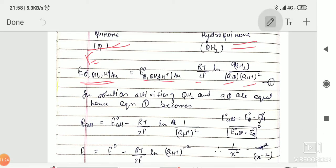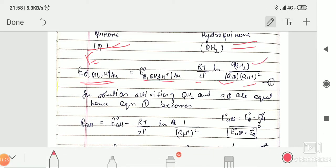In a quinone solution, the activities of hydroquinone and quinone are equal, so these two terms cancel out. Now, only we get E cell equals E naught cell minus RT upon 2F ln 1 upon activity of H+ concentration.